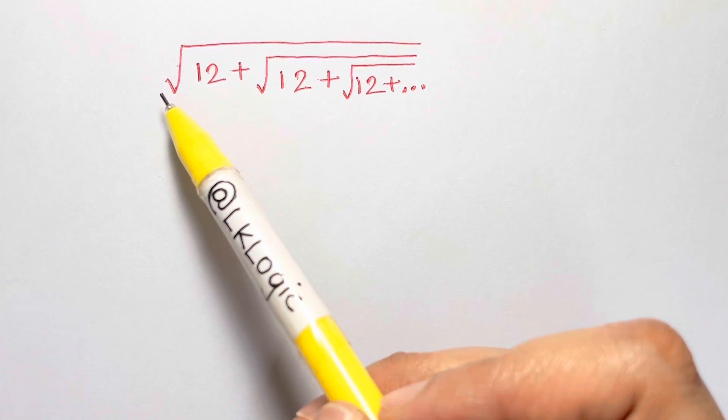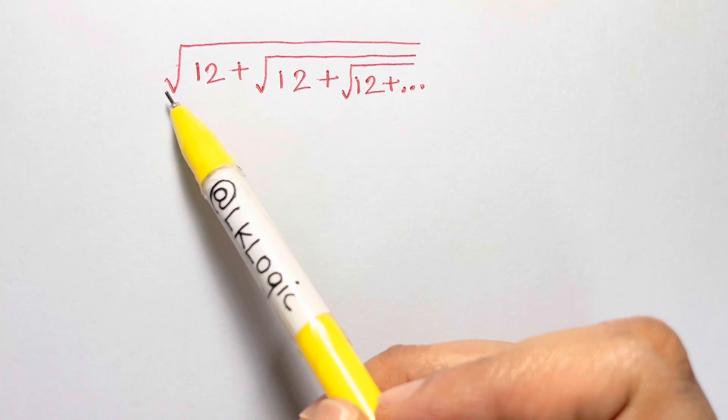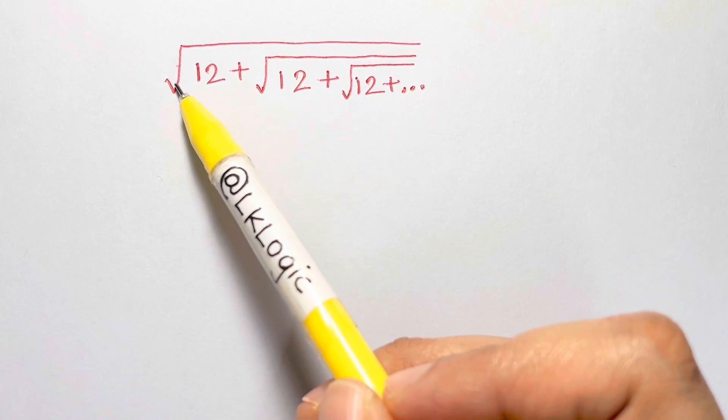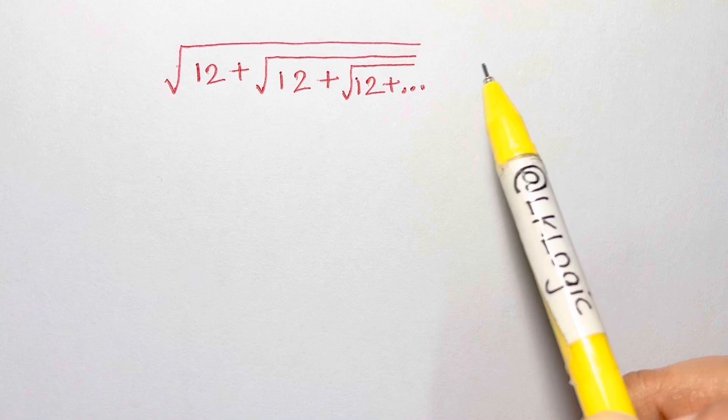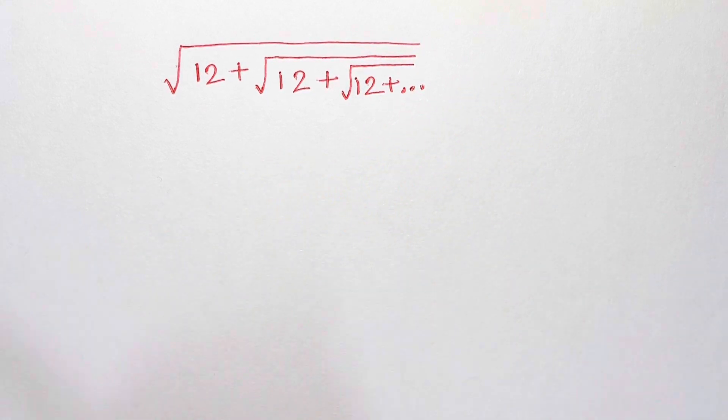Hi guys, I have an interesting Math Olympiad problem for you all, which is a radical problem: square root of 12 plus square root of 12 plus square root of 12 and so on equals to what?